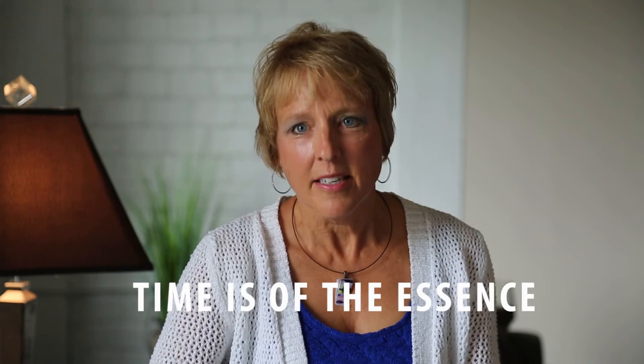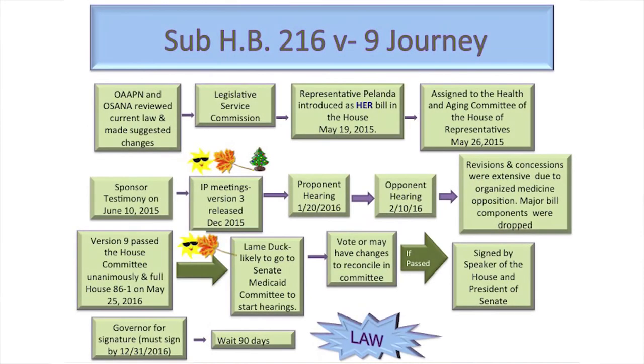That advisory committee will have representation from the four different specialties and will be there to answer questions regarding our practice for the Board of Nursing, and be able to discuss how their rules and regulations may affect our practice and our patients. Also, APRN will become an umbrella term for all four specialties, and we will have an APRN and an RN license. You can find a full list of Version 9 successes at OAPN.org. We still have a lot of work to do and very little time to do it in. The lame duck session starts mid-November. House Bill 216 Version 9 needs to move to the Senate, likely to the Senate Medicaid Committee. Proponent and opponent testimony needs to be heard, the committee will need to vote, the whole Senate will need to vote, and if there are any changes, the bill will have to be reconciled in conference committee before it can be sent to the Governor — all by December 31st.